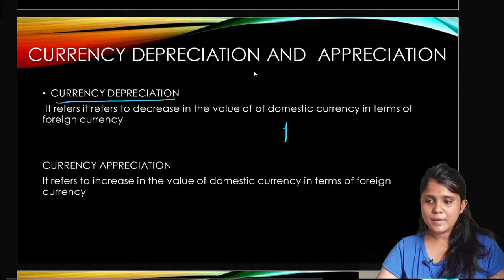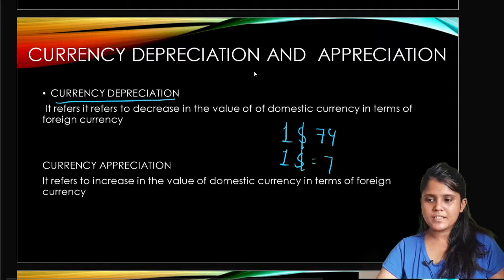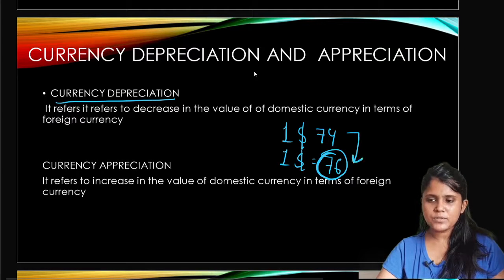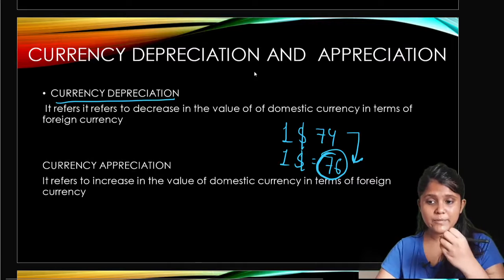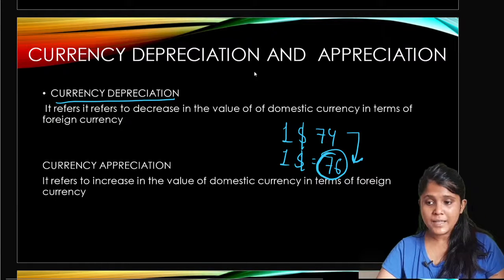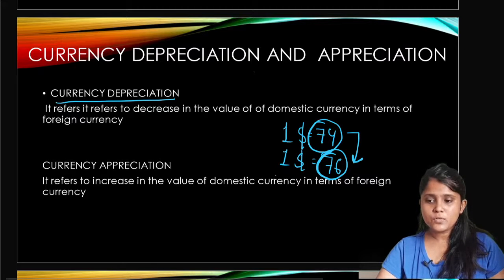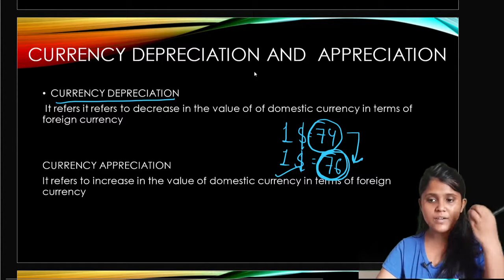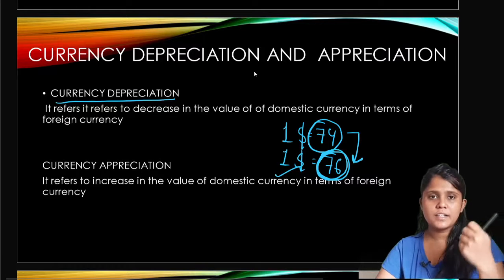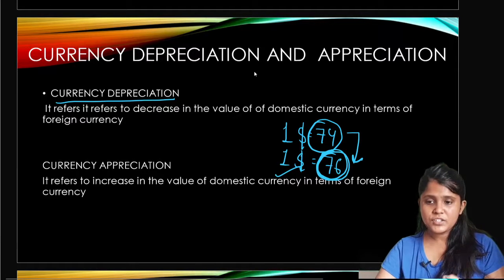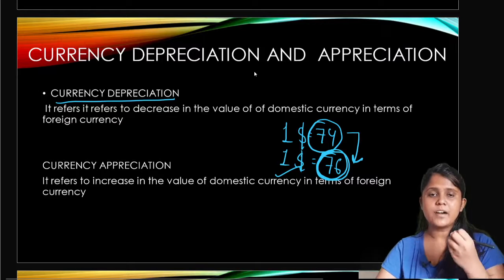For example, if 1 dollar equals 74 rupees, and now 1 dollar becomes 76 rupees, that means the value of the rupee has fallen. The price going up here means the value is decreasing. Earlier we got 1 dollar for 74 rupees, but now we have to pay 76 rupees — 2 extra rupees — for the same dollar. So the dollar's value is increasing. That is currency depreciation: a decrease in the value of domestic currency in terms of foreign currency.